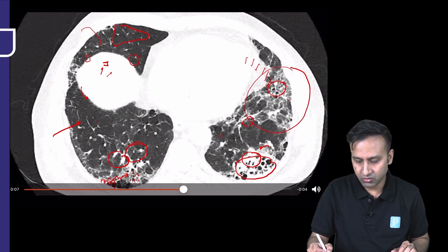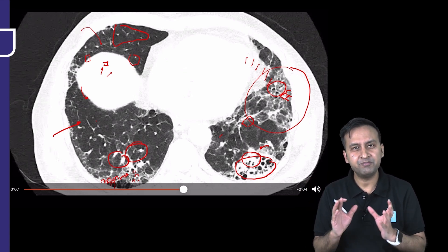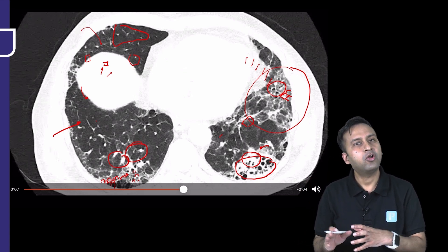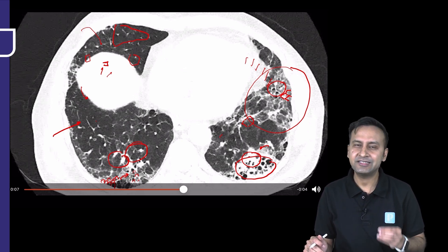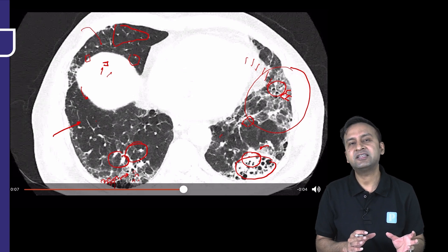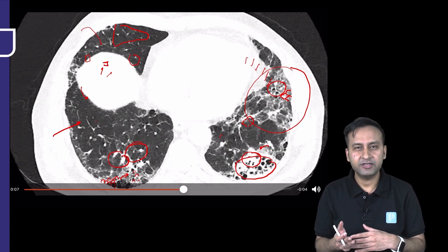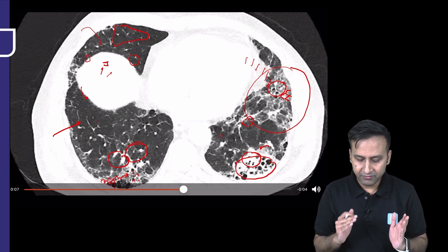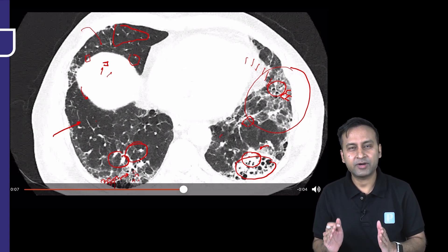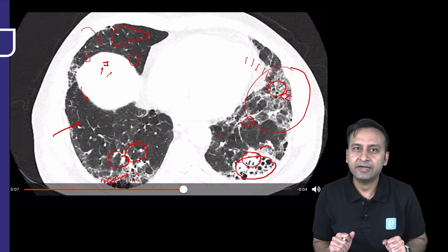We can also see ground glass opacities and interlobular and intralobular septal thickening. With all these observations made, almost half the work is done. The list of differentials in ILDs is very small — you characterize ILDs into various patterns and the rest is clinical integration. Now that we've looked at the case in totality, let's look at a few important representative images and discuss the key findings once again.